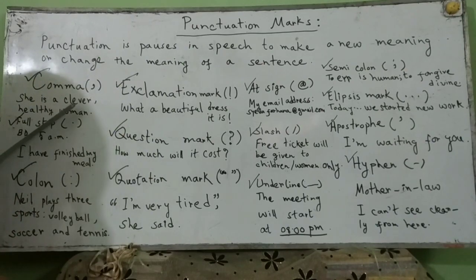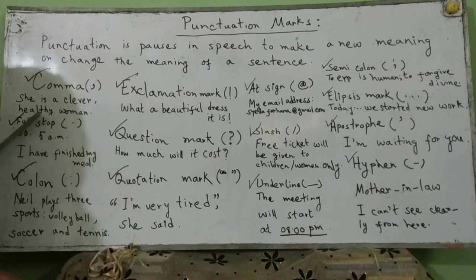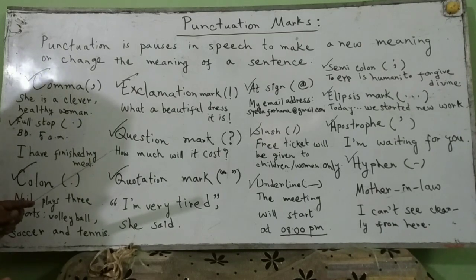For example: 'She is a clever, healthy woman.' Here, 'clever' and 'healthy' are the same type of word — both are adjectives — and they are separated by a comma.